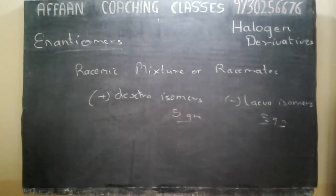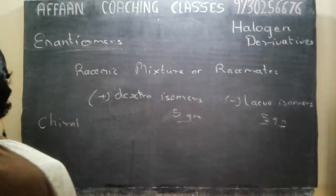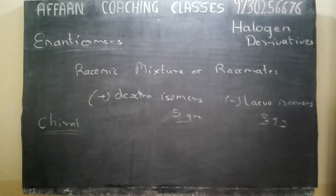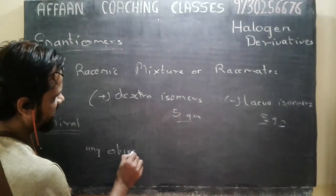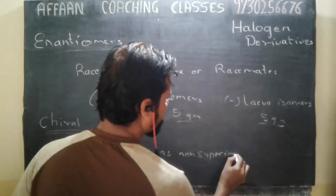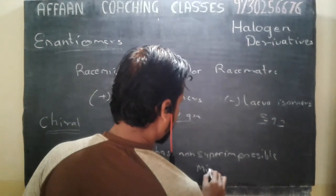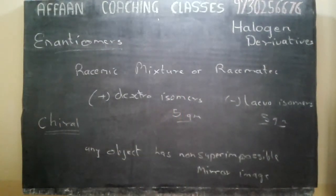Now, chirality. Chirality is the property of a non-superimposable mirror image. Any object which has a non-superimposable mirror image is known as a chiral object, and this property is known as chirality.